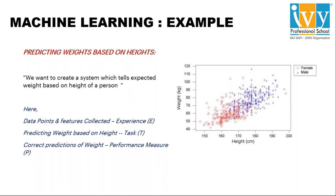A simple example is where you want to predict a person's weight based on their height. The data points or features collected are your experience, predicting weight based on height is the task, and the prediction of weight is the performance measure. This is a simple regression problem. When you run a regression just one time it might not be machine learning, but once you run a regression in a loop — happening N times — and the performance measure improves, that automatically gets classified as machine learning.